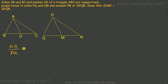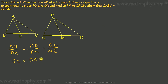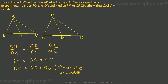BC is equal to BD plus CD. Since AD is a median, BD is equal to CD, so BC is equal to 2BD.